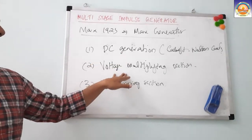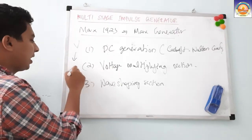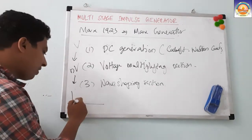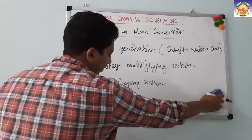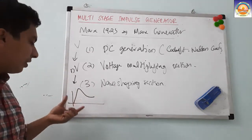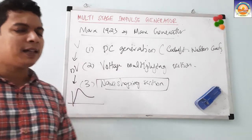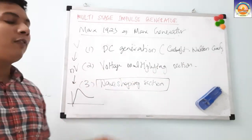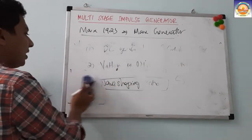The high voltage DC goes through the voltage multiplier section where it is multiplied to N times V. Then the wave shaping section ensures whether it is a 1.2/50 microsecond lightning impulse or a switching impulse waveform. In the single stage we had just two capacitors — source and load — but here we will have several source capacitances. Marx's idea is simply that.